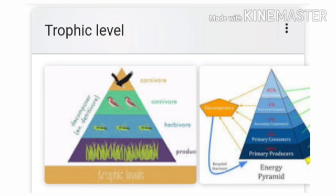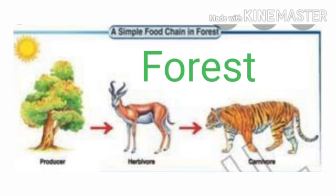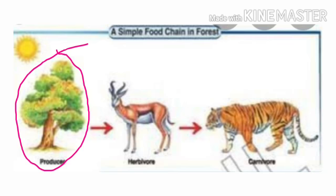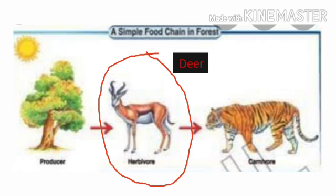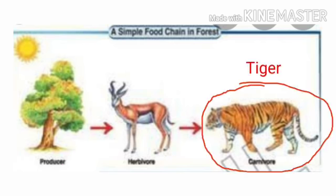Let's study a forest food chain. In a forest, the food chain consists of grasses, small shrubs, and herbs eaten by a herbivore like deer, which in turn is consumed by a carnivore like a lion or tiger.